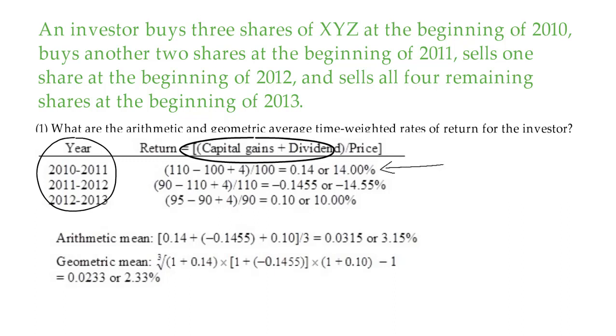So in the first row, you have 110 minus 100 plus 4 as the dividend, divided by 100, which gives you 14%. Likewise, you calculate returns for each of these periods and you get negative 14.55% and 10%.